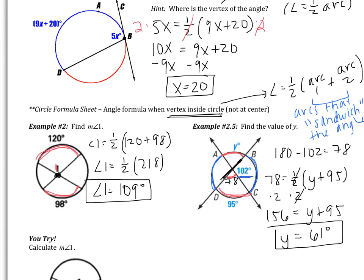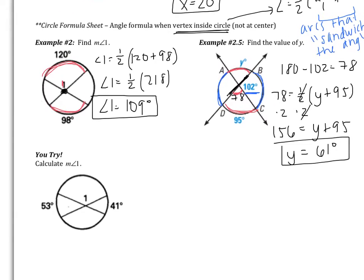What's really important to remember is that the angle has to be sandwiched in between the two arcs. In the example we just looked at, the 102 is sandwiched between the blue arcs, and the 78 is sandwiched between the red arcs. Now I have an example I'd like you to try. Please pause the video and calculate the measure of angle 1 on your own. Good luck!